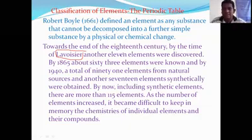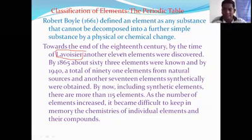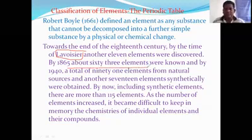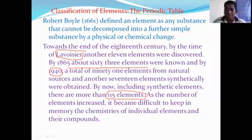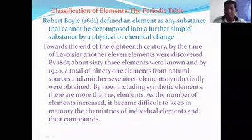Individual elements without carbon and hydrogen are known as inorganic. In 1865, about 63 elements were prepared. By 1940, the total elements extracted was 115. These elements are assigned names based on their atomic number and as well as their electronic configuration.